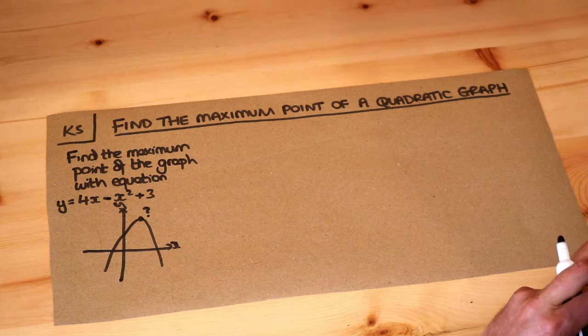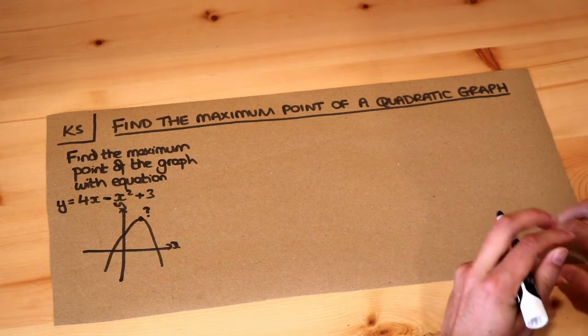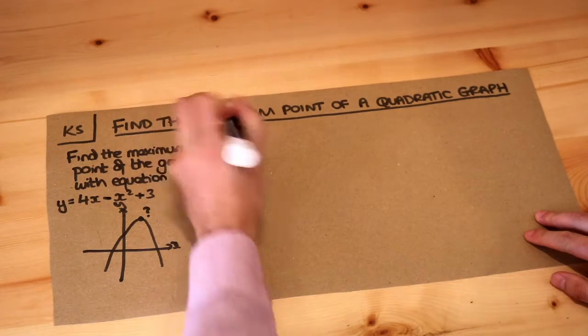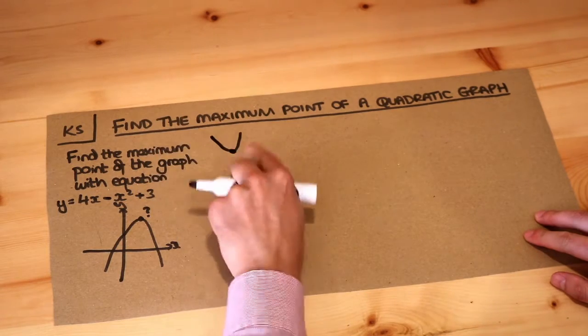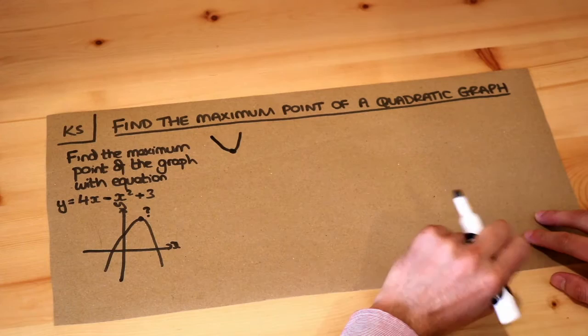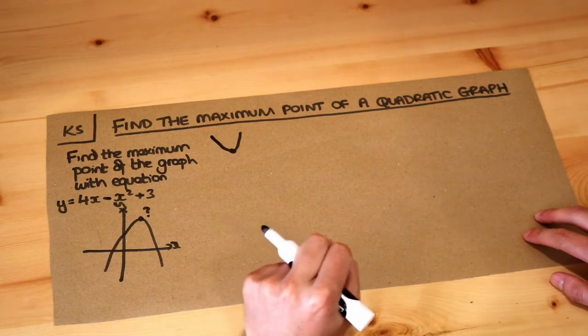In the previous video we saw how to find the minimum point of a quadratic graph. So if we had a quadratic that looked like that, we had a way of finding the coordinate of the minimum point, and the way we did that was to complete the square.